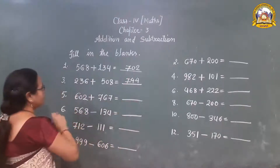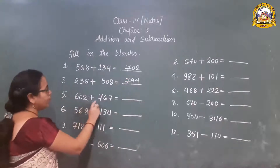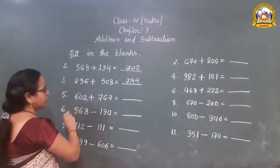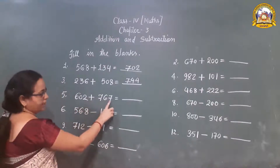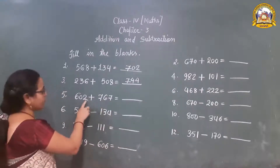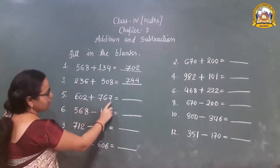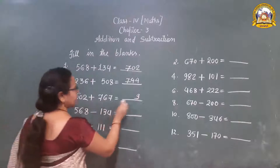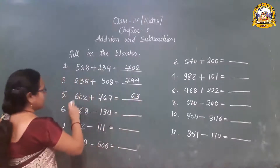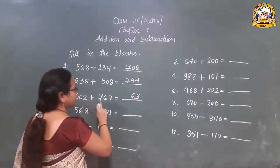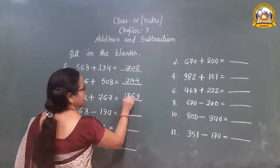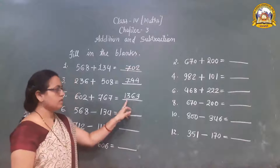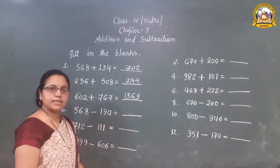Now: 602 plus 767. How to add the numbers? First we add the ones place digits. 2 plus 7 is 9. 0 plus 6 is 6. 6 plus 7 is 13. So what is the answer? The answer is 1369.